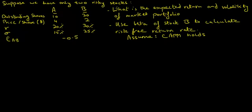Suppose we have only two risky stocks: stocks of company A and stocks of company B. Company A has 10 outstanding shares and company B has 20 shares outstanding. The price per share of company A is $4 and the price per share of company B is $2. The expected rate of return on company A's stock is 20% and that on company B's stock is 30%. The volatility of company A's stock is 15% and the volatility of company B's stock is 25%, and the correlation between A and B is negative 0.5. The question is: what is the expected return and volatility of the market portfolio?